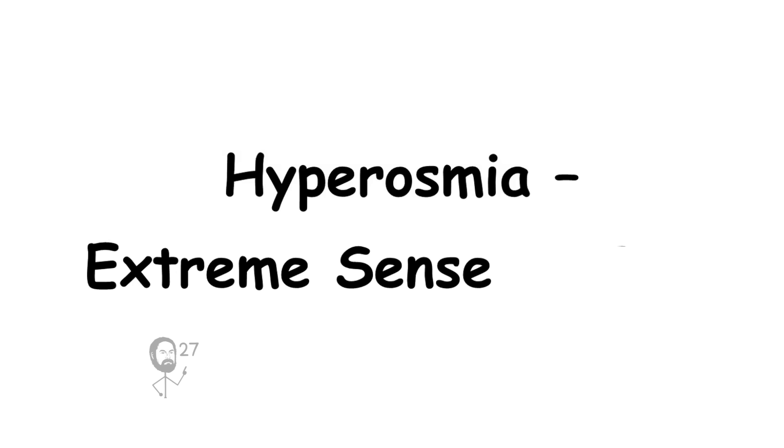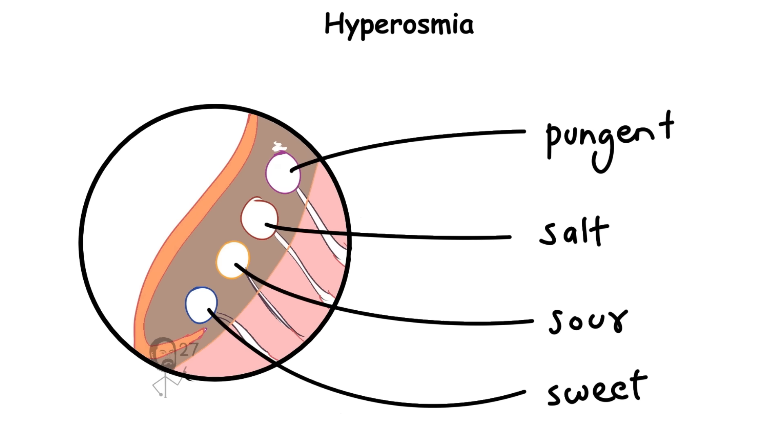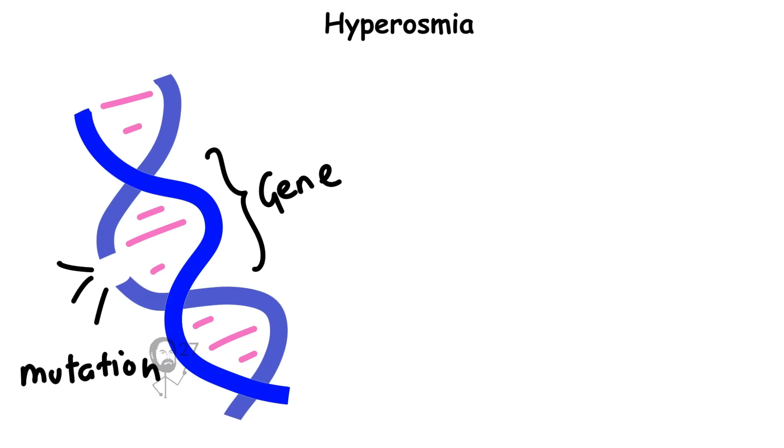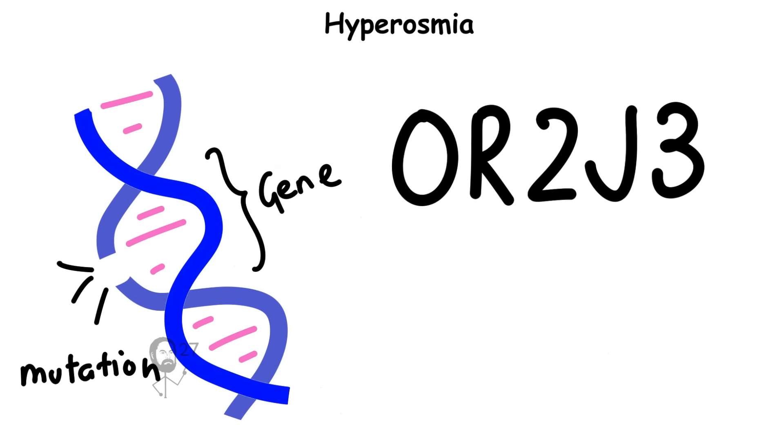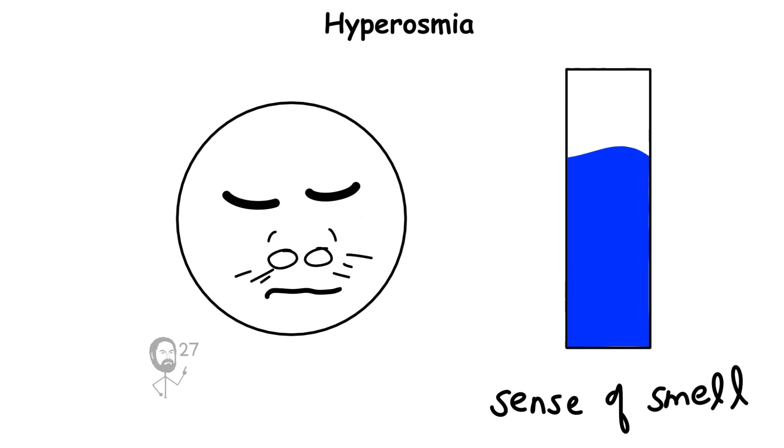Hyperosmia. Extreme sense of smell. The human nose contains hundreds of olfactory receptors, each tuned to detect specific scent molecules. In rare cases, mutations in receptor genes such as OR2J3 lead to a condition known as hyperosmia, where the sense of smell becomes dramatically heightened.